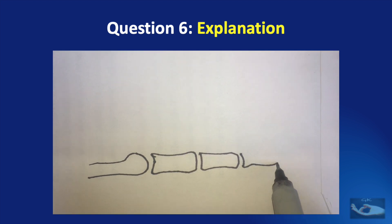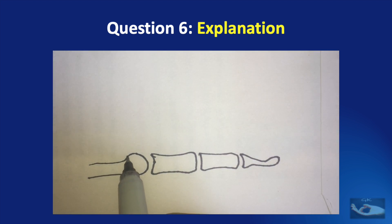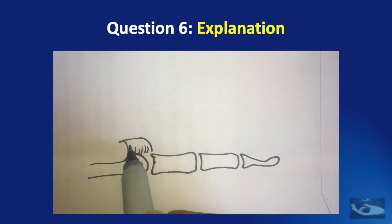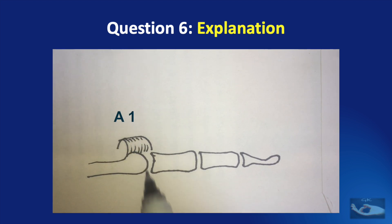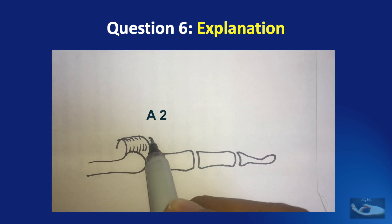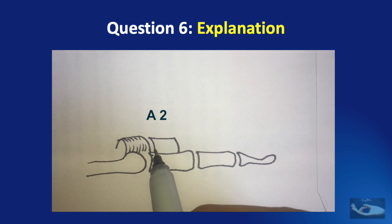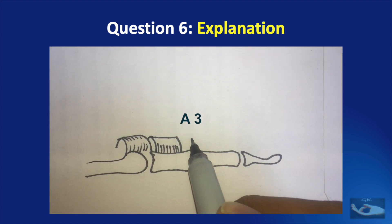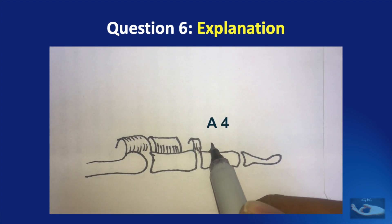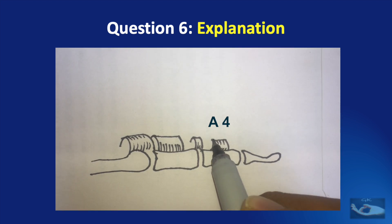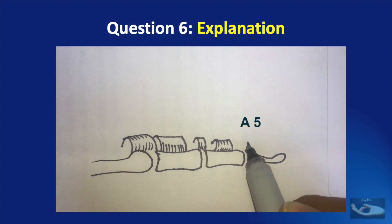This shows the metacarpal, proximal phalanx, middle phalanx, and the terminal phalanx. Over the level of the metacarpophalangeal joint is the first pulley called the first annular pulley, A1. The next pulley, A2, is over the proximal two-thirds of the proximal phalanx. Over the proximal interphalangeal joint is the A3 pulley. And over the middle of the middle phalanx is the A4 pulley.